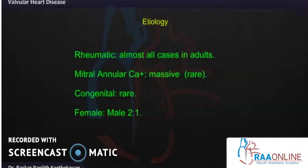Almost all cases of mitral stenosis are rheumatic in origin, and usually the valve is calcified, though massive calcification is quite rare. Congenital mitral stenosis is also rare, and other etiologies such as mitral annular calcification are quite rare as well. The female to male ratio is 2:1 in case of mitral stenosis.